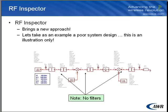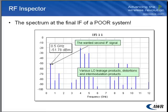If we take a look at RF Inspector, here we constructed an RF link that utilizes no filters — hence it's a poor design — and we can run the simulation and look at the resulting spectrum. Clearly, we can see the wanted IF signal and the various LO leakage products and distortion products that are generated.